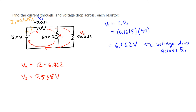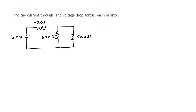By the same logic, because the electron could have gone through the 80 ohm resistor instead and returned to the battery, having already dropped across R1, it must use up the remaining voltage through V3. By Kirchhoff's loop rule, V3 is the same as V2. At this point we're very close to our final answer. We've found everything we need for R1, and now we just need to finish up resistors 2 and 3.